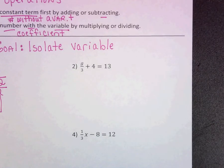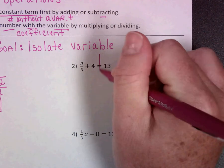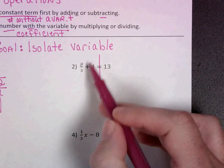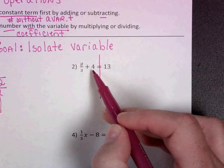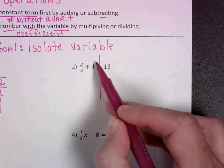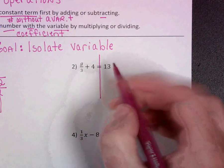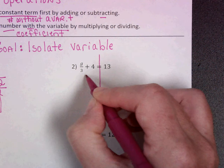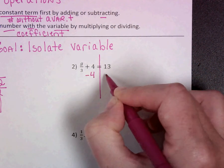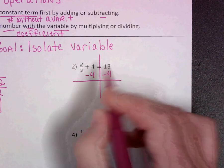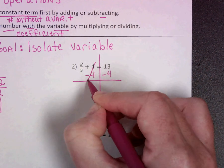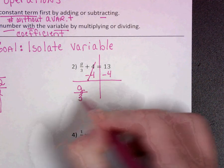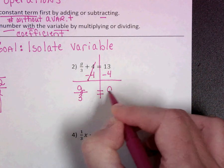Okay, let's look at number 2. I'm going to draw a line down through my equal sign just to help keep it separated. Remember, we want to cancel out our constants, the one that's not with the variable first. This is plus 4, so the opposite is to subtract 4. Okay, so that cancels out.